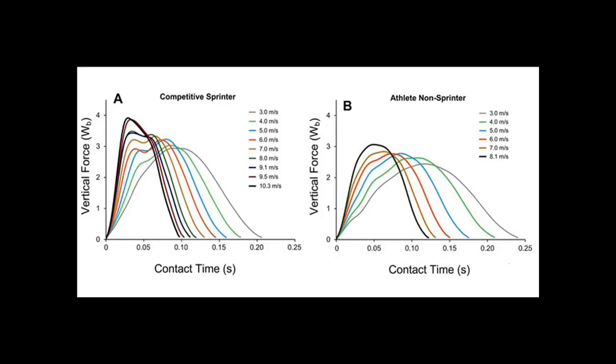But a lot of the data in this study does confirm, again, that increased vertical force production is required to increase top speed. So here, we're looking at force curves at different running speeds. The force units on the left axis are body weight. So two means two times body weight. Three means three times body weight. So on and so forth.